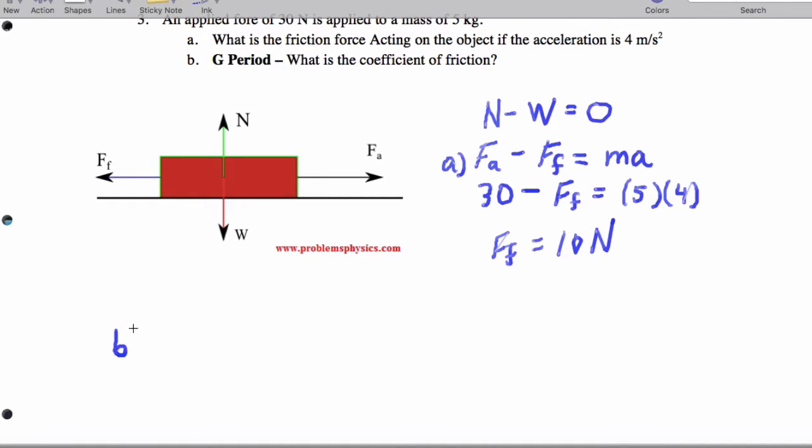Okay, now for part B, we want the coefficient of friction. This is if you're in G period. So friction is mu times the normal force. Now, here we know that the normal minus the weight equals zero. Let's plug in some numbers.